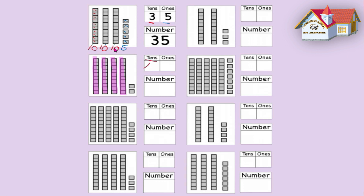We have four tens. And what does four tens make? Four tens make 40. 10 add 10 add 10 add 10 makes 40. I'm going to write 40 down here so that we remember that. Shall we use another pencil? Let's use green this time. So we have four tens. Let's see how many ones we have.